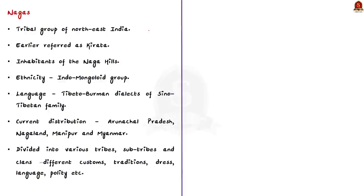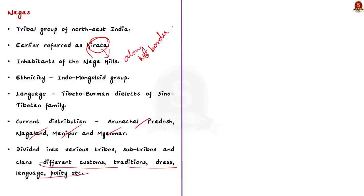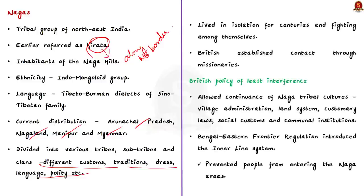Some sources say they were earlier referred to as Kirata. Initially they were inhabitants of the Naga Hills, along the northeast frontier on the Assam-Burma border. Ethnically, they belong to the Indo-Mongoloid group and speak the Tibeto-Burman dialects of the Sino-Tibetan family. Now, Nagas occupy a vast area of Arunachal Pradesh, Nagaland, Manipur and Mizoram. Nagas are divided into various tribes, sub-tribes and clans with varying customs, traditions, dress, language, etc. These tribes had been living in isolation for centuries and only in the last century came into contact with the rest of the world, especially during British India through the efforts of British missionaries. Many Nagas started following Christianity as a result.